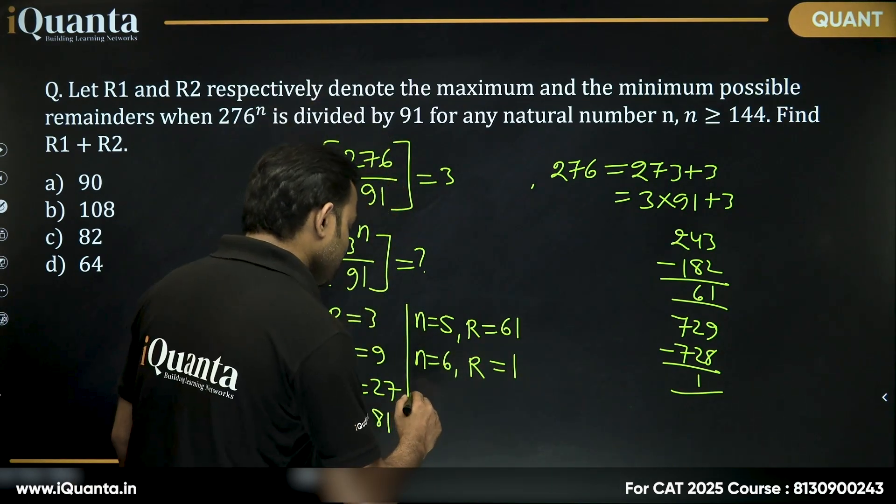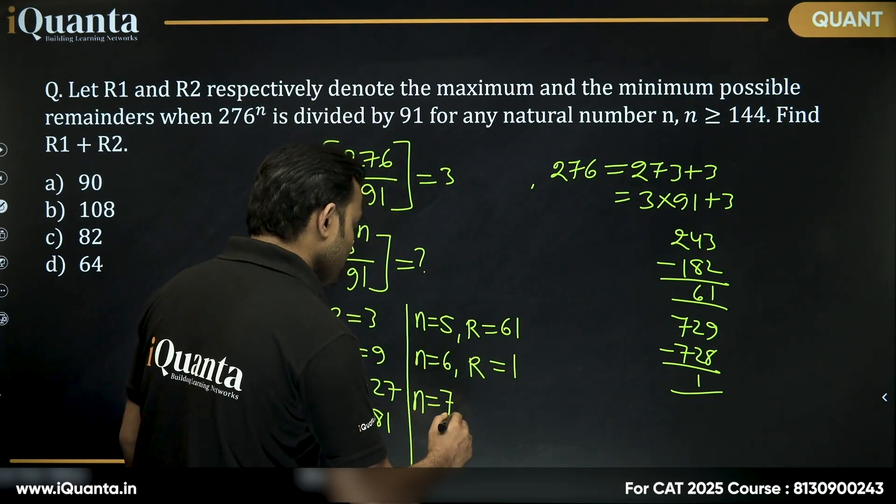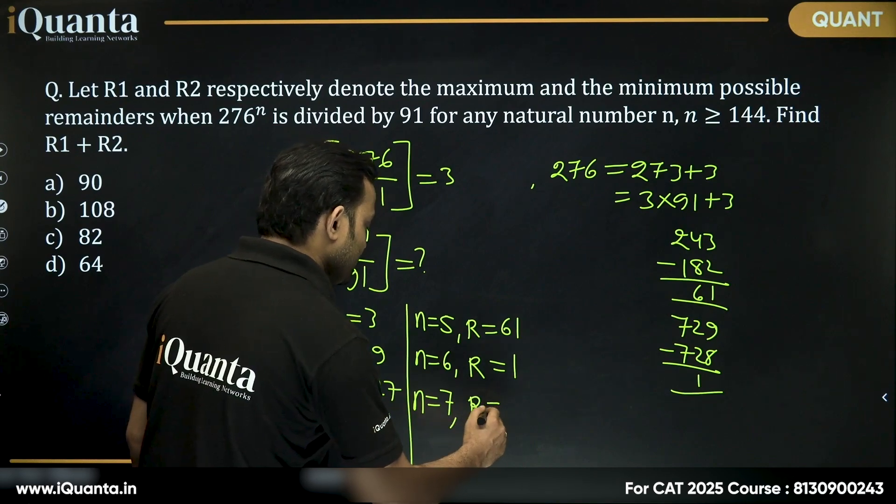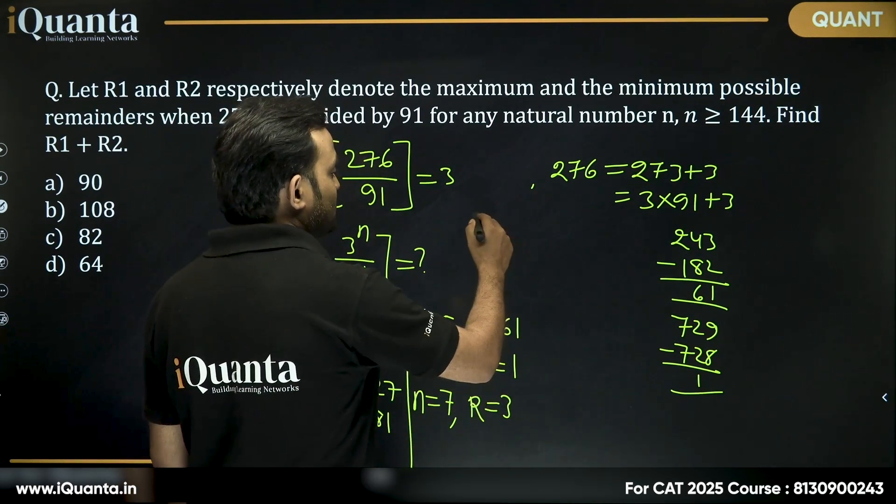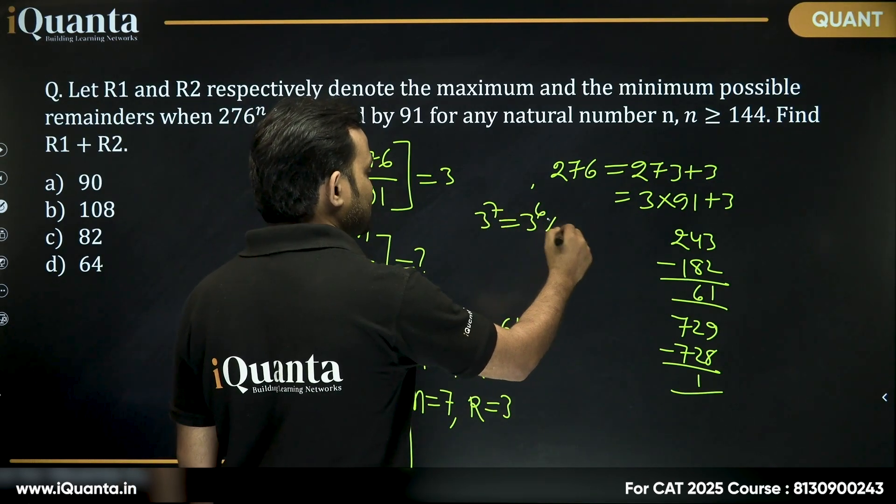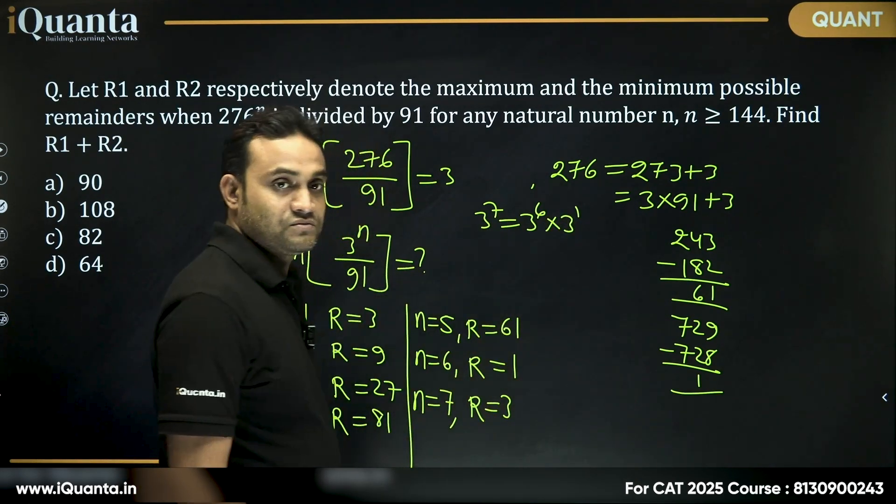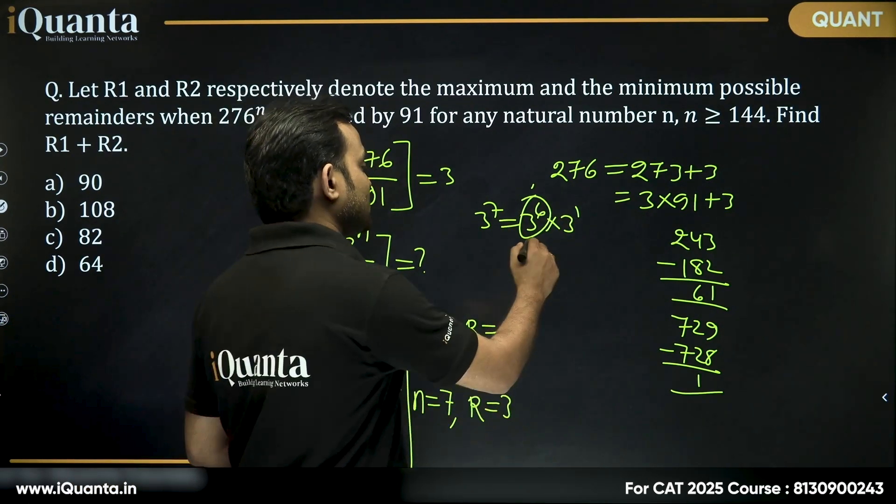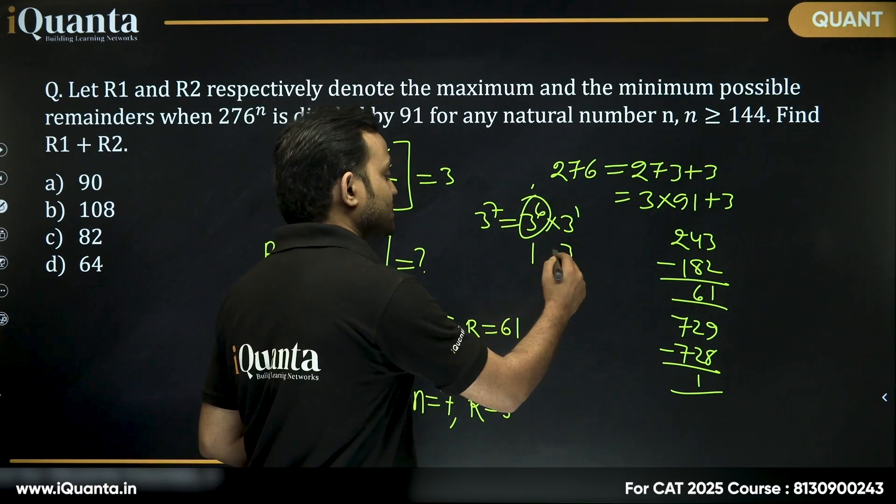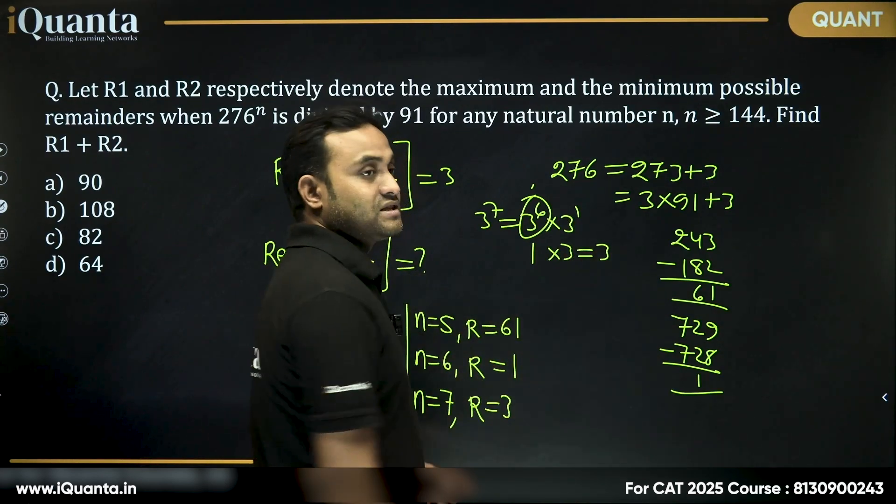Now if I take n equals 7, then what will be the remainder? Remainder will be again 3. Because 3 to the power 7 can be written as 3 to the power 6 into 3 to the power 1. Remainder when 3 to the power 6 is divided by 91 gives us a remainder of 1. This will give us a remainder of 3. Ultimately, the remainder will be 3.